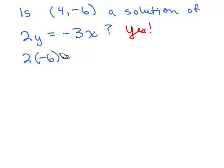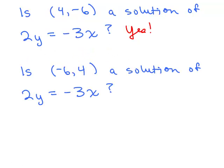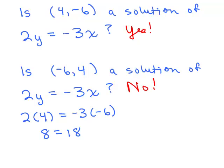Let's ask another question. How about you try this one? Is (negative 6, 4) a solution of 2y equals negative 3x? Try that. This time I'm going to plug in 4 for y. Remember, the ordered pairs are x, y. So we're plugging negative 6 for x and 4 for y. So I'm plugging in negative 6 for x. Now what does that give me? 8 is equal to 18? I don't think so. So the answer to that one is no.